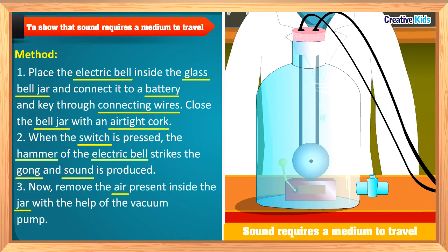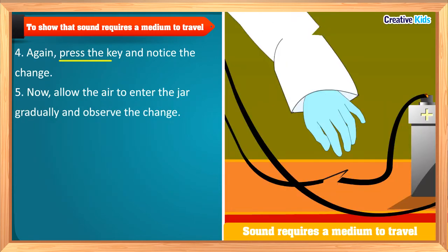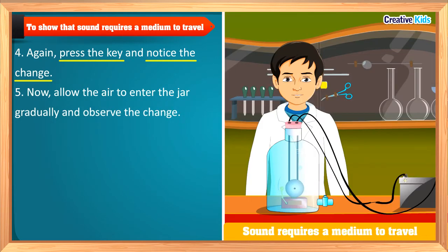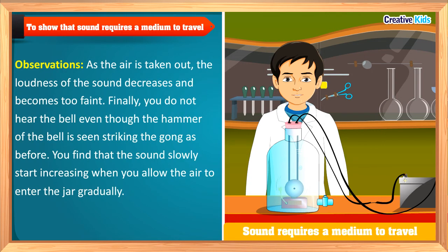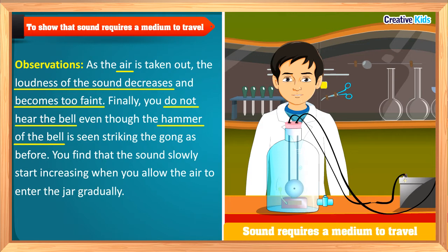Now remove the air present inside the jar gradually with the help of a vacuum pump. Press the key again and notice the change in sound. Then allow the air to enter the jar gradually and observe the change in sound again. You will observe that as the air is taken out, the loudness of the sound decreases and becomes too faint, and after removing all the air, no sound is heard even though the hammer of the bell is seen striking the gong as before. As the air starts entering the jar again gradually, you will find that the sound starts increasing slowly.